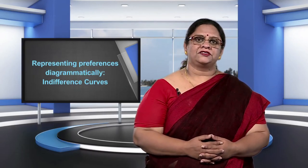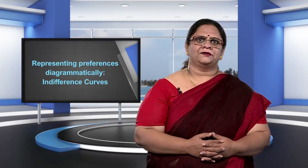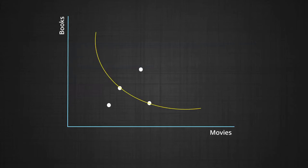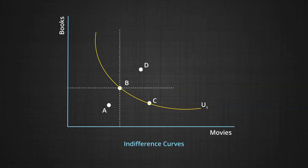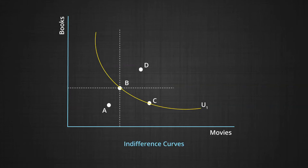How can we represent these preferences diagrammatically? Consider the diagram on your screen. We have represented movies on the x-axis and books on the y-axis. Various points such as A, B, and D represent bundles of movies and books. Clearly, A has less of both movies and books than B, whereas D has more of both. A consumer would therefore derive greater utility from a bundle like B than from A, and even more utility from bundle D than from B. So the consumer would clearly prefer B to A and D to B.